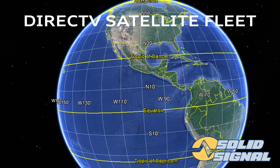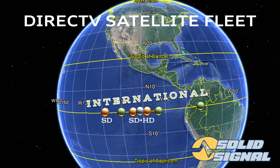All communication satellites sit up above the equator — they have to in order to have geostationary orbit. DirecTV satellites sit in a cluster at 101, 99, and 103 degrees. These are used primarily for standard definition and high definition service. There's a fourth satellite used for some standard definition service at 119 degrees. There are also international satellites — meaning they still go to the US but carry non-English language programming — including the 110 satellite, as well as two others at 72 and 95 degrees.